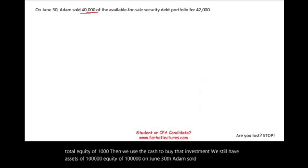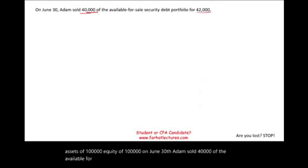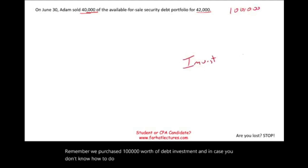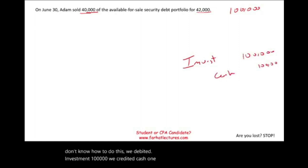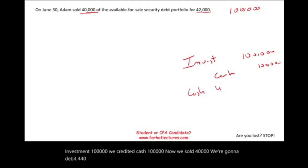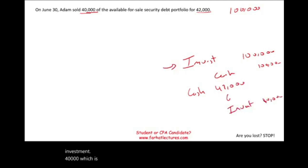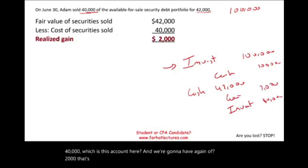On June 30th, Adam sold $40,000 of the available-for-sale securities for $42,000. The journal entry: debit Cash $42,000, credit Investment $40,000, credit Gain $2,000. We purchased $100,000 of investment and sold $40,000 worth for $42,000, recording a realized gain of $2,000.